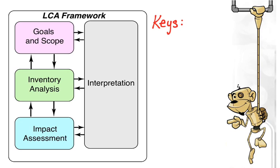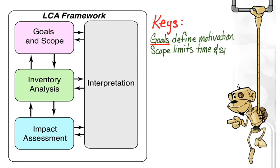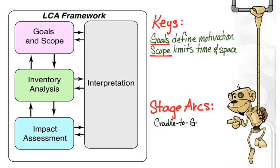So here's our LCA framework with goals and scope, inventory analysis, impact assessment, and interpretation. The goals definition defines the motivation for doing a project — why are we actually analyzing something? The scope in goals and scope limits us to a certain time and a certain limitation of space. Are we studying the entire planet, or limiting our spatial extent of measurement to somewhere nearby the plant where something is being manufactured, or to the part of the world where the modules are being used? The scope can also refer to time in terms of the different stages — stages were an important part of the life cycle — and scoping in time has actual terms to it.